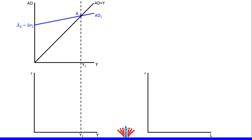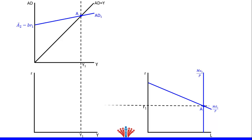In the money market, we will draw the real money supply as a vertical line and the downward money demand curve. The point of intersection is the equilibrium, which we will label as A. We will draw a horizontal dotted line to reflect the equilibrium real interest rate in the money market and IS-LM model.